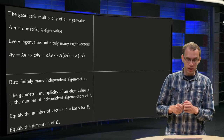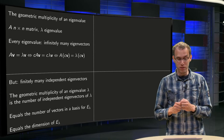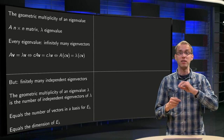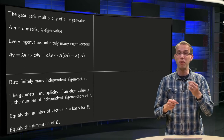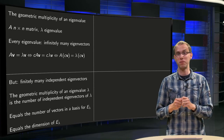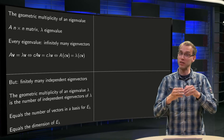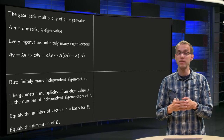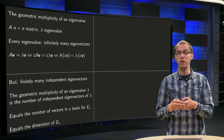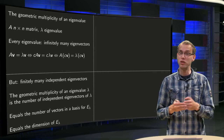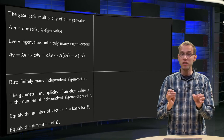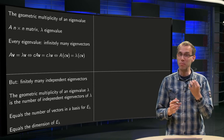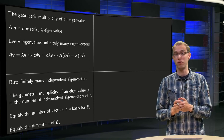The geometric multiplicity of an eigenvalue lambda is the number of independent eigenvectors of lambda. Lambda has infinitely many eigenvectors, but the number of independent eigenvectors is called the geometric multiplicity. This number equals the number of vectors in a basis for E_lambda, because basis vectors are automatically independent. The number of vectors in a basis of a subspace is called the dimension, so the geometric multiplicity equals the dimension of E_lambda.